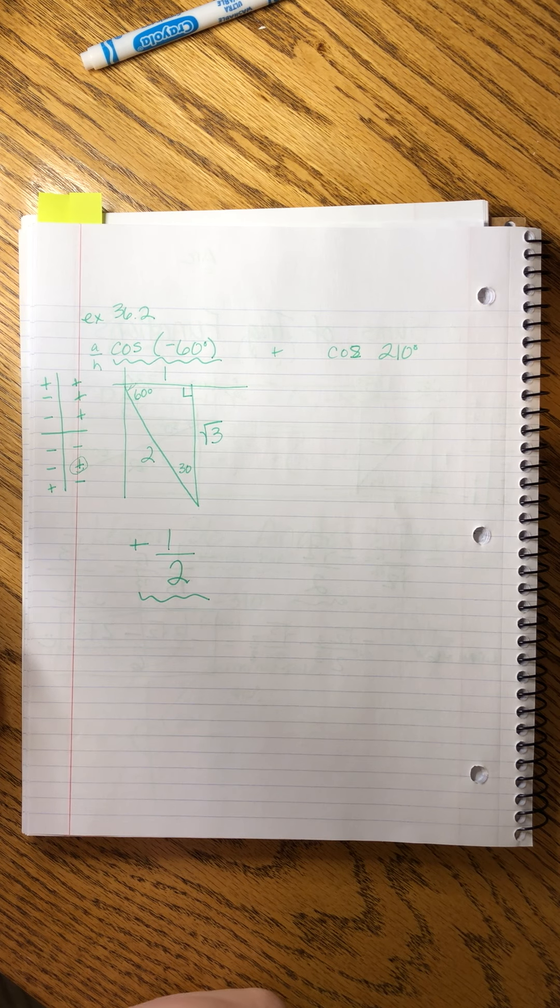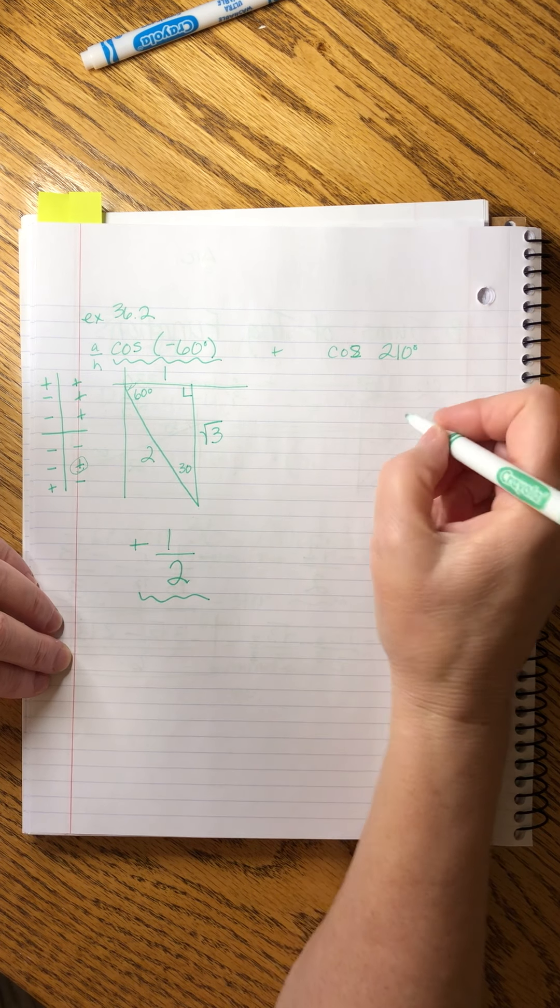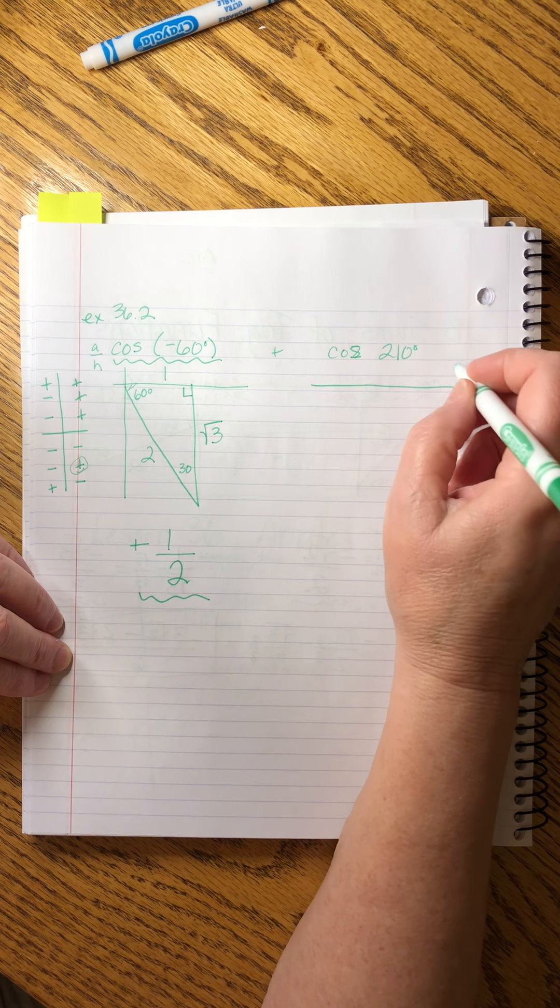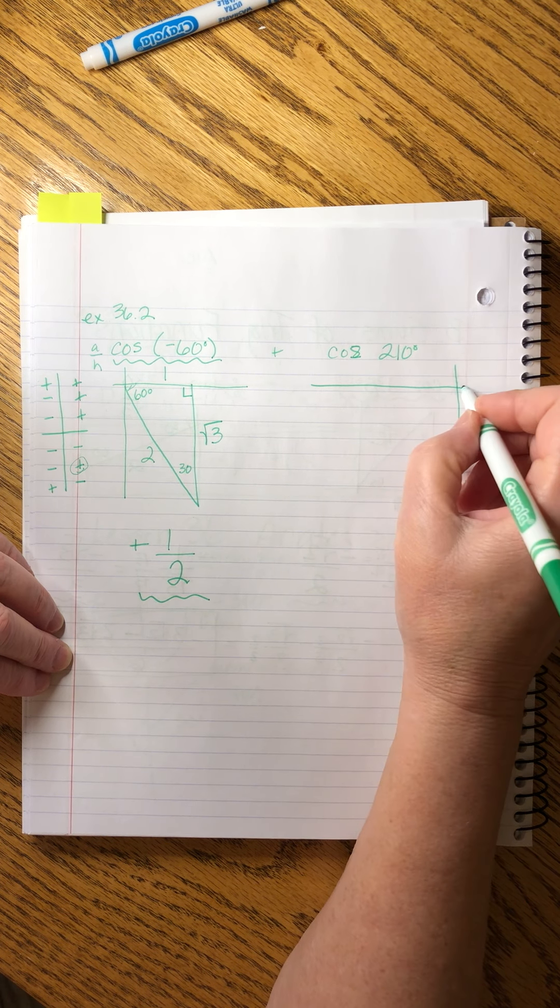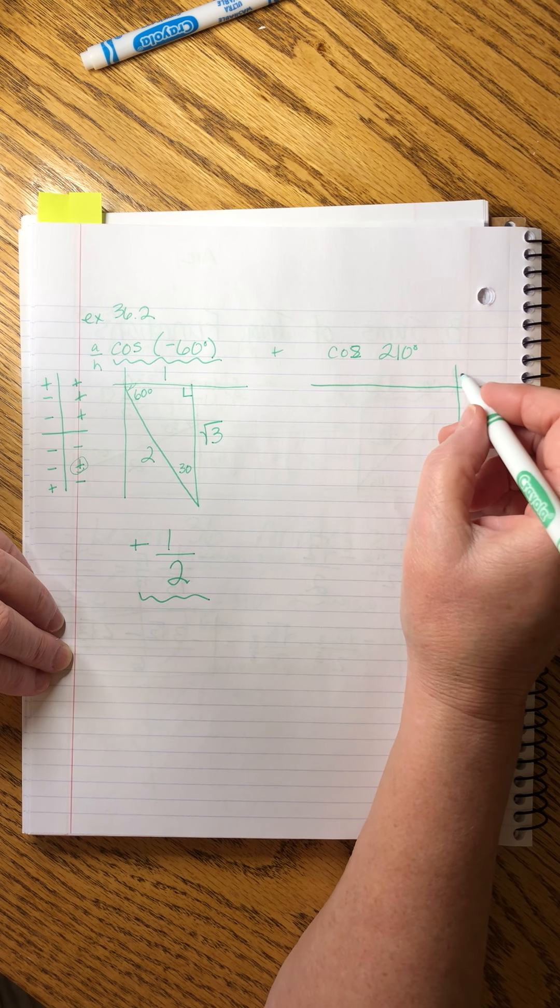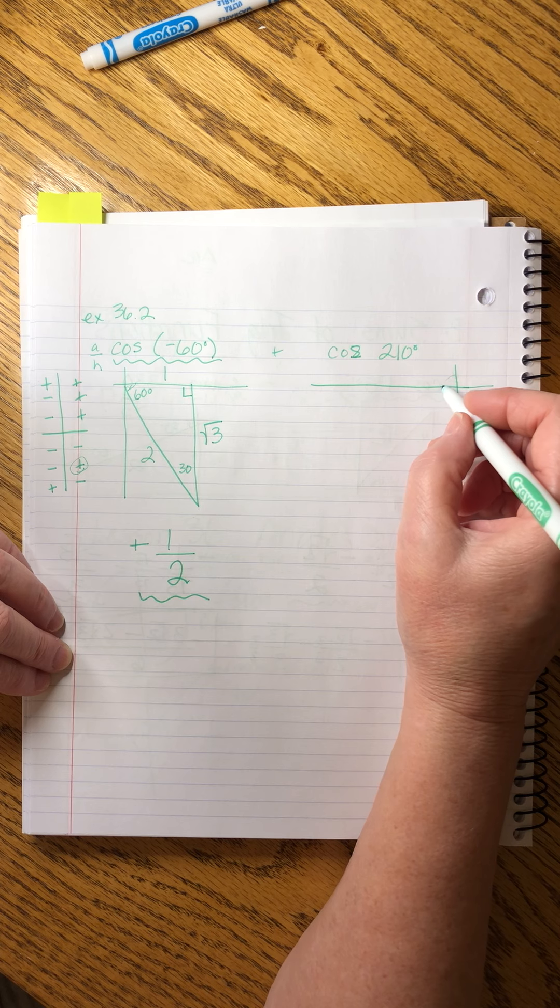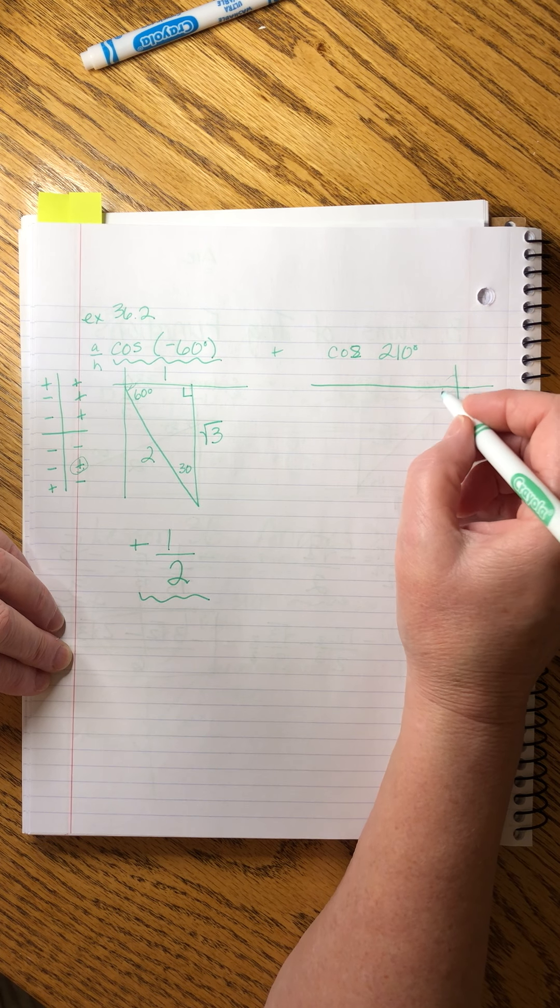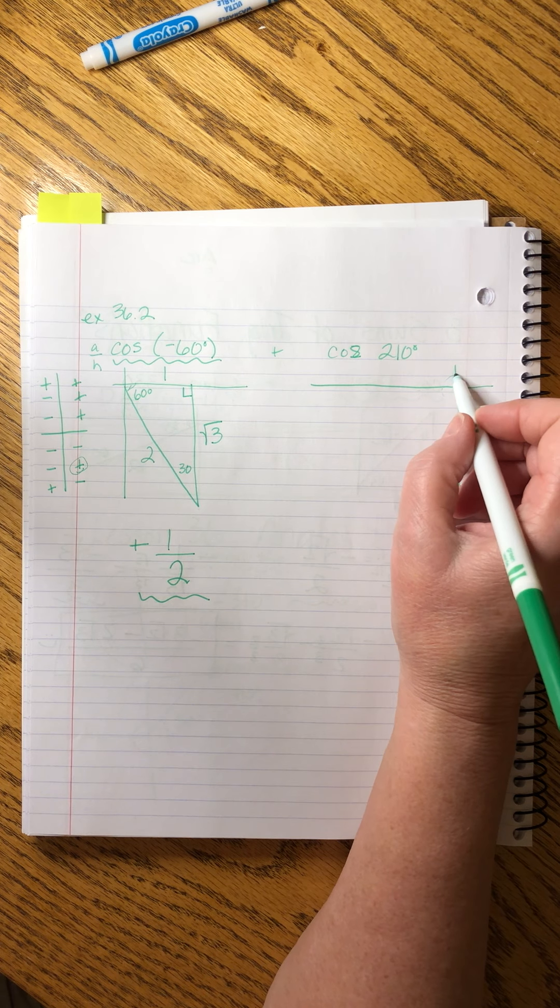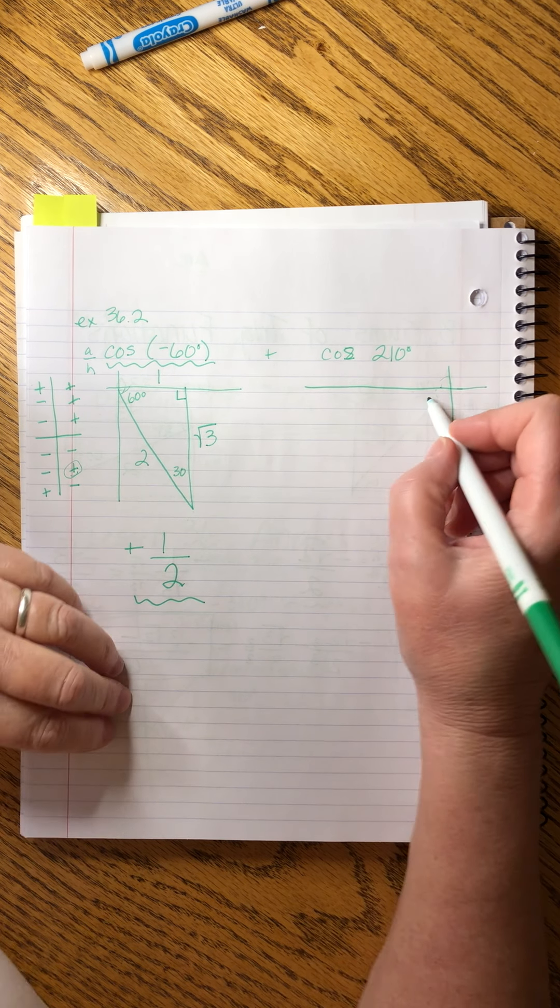210 positive. That's going to be 90, 180, 270. That's going to be in the third quadrant. Do you see how I'm mapping that out? I'm just kind of imagining the quadrant and going, we start here. We go 90, 180, 270 is the whole way. So I know it's going to be in here. So I know that this is 90, this is 180, so I'm going to need 30 more degrees.